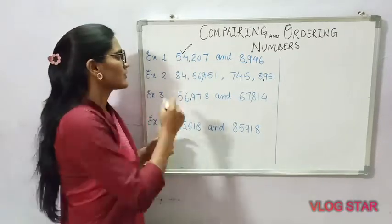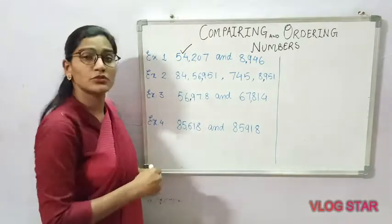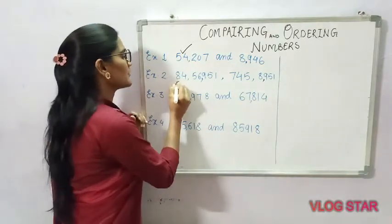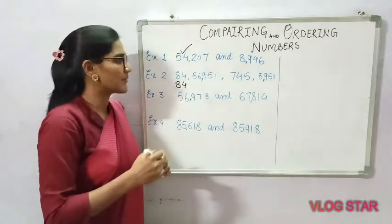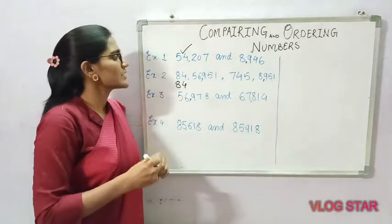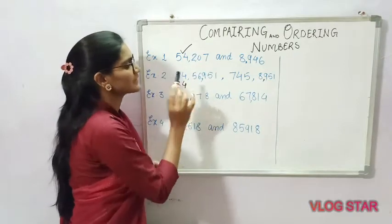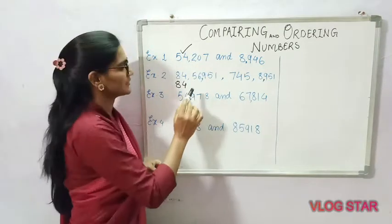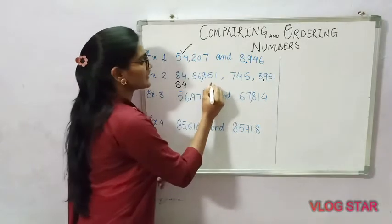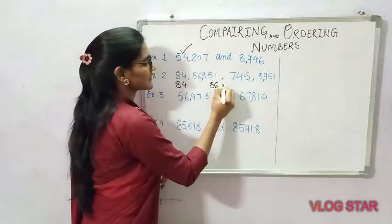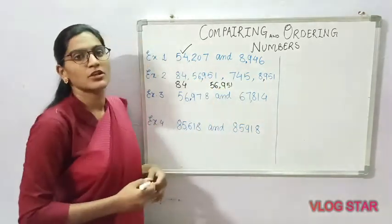You can see that 84 is a two-digit number, so it is the smallest. And you can find the greatest number, which is 56,951, as it has the most digits. By using this first rule, you can compare numbers.